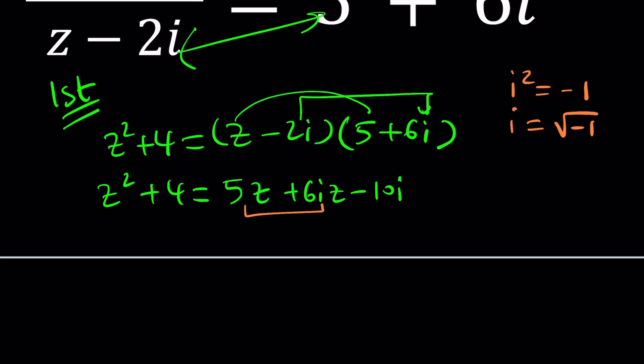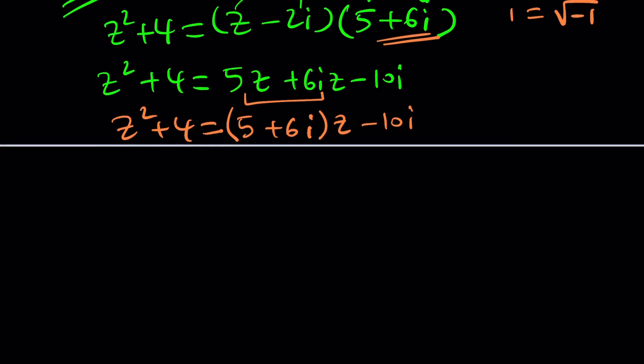So we do z squared plus 4 equals 5z plus 6iz minus 10i. Before I forget, i squared is equal to negative 1. i is the imaginary unit. It can also be defined as the square root of negative 1. We consider i to be the principal square root of negative 1. Let's go ahead and solve this problem. To solve this problem, let's put everything on the same side. But before we do that, I can actually factor out a z here. So it becomes 5 plus 6i multiplied by z.